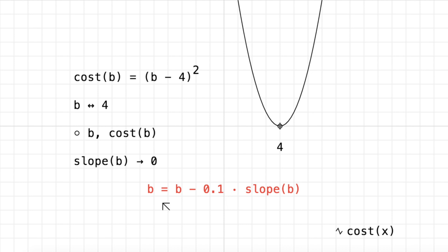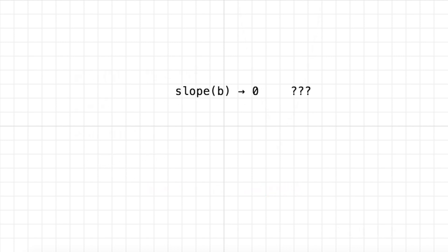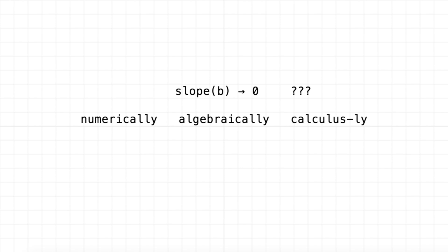The question is: how do I get this function that gives me the slope of my cost function at specific values of b? We're going to answer that in this video, and we're going to see how to do it three ways. The first way is we're going to find it numerically, then we'll derive it algebraically, and then we'll use some simple rules from calculus to find it using calculus.